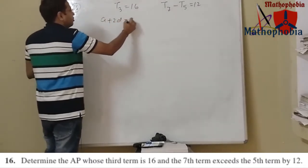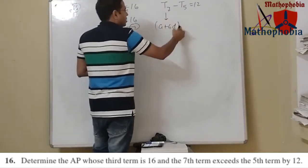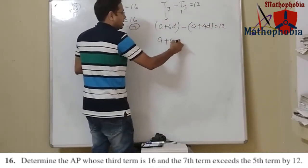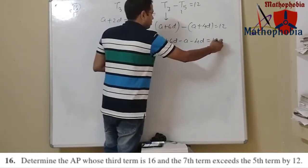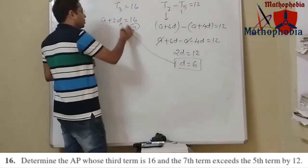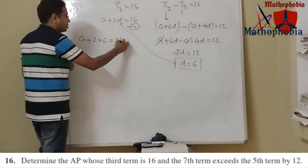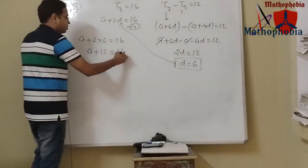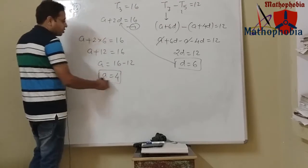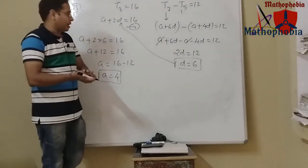From the third term: a + 2d = 16 — equation 1. From the condition that the 7th term exceeds the 5th term by 12: (a + 6d) - (a + 4d) = 12, so 2d = 12, giving d = 6. Substituting d = 6 into equation 1: a + 12 = 16, so a = 4.